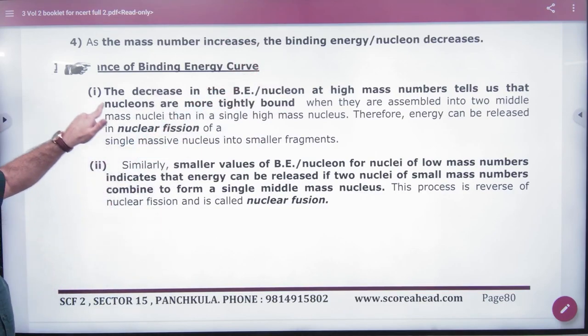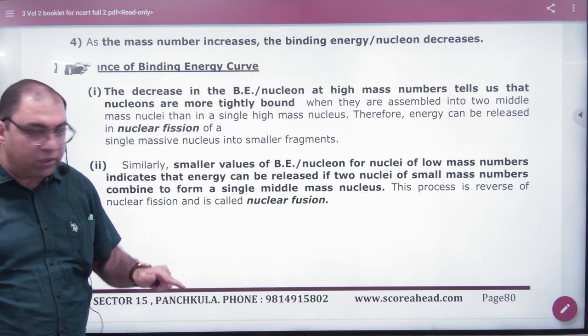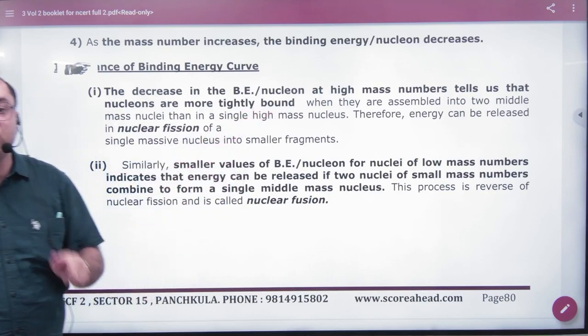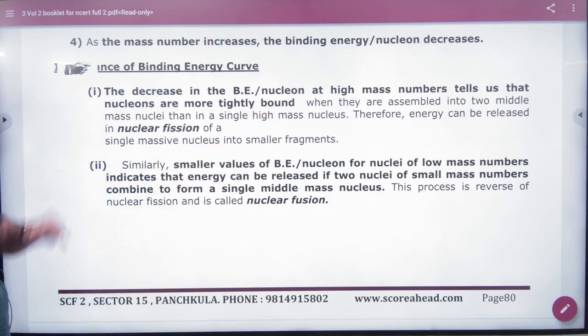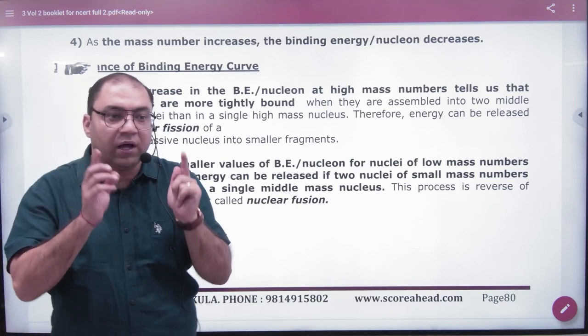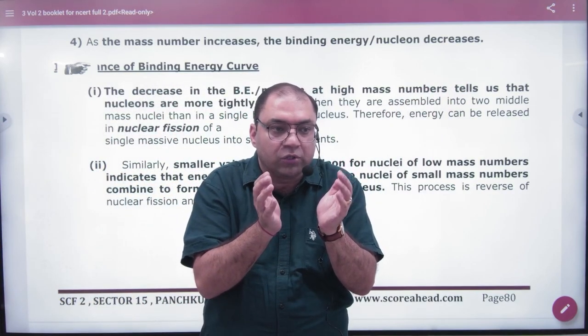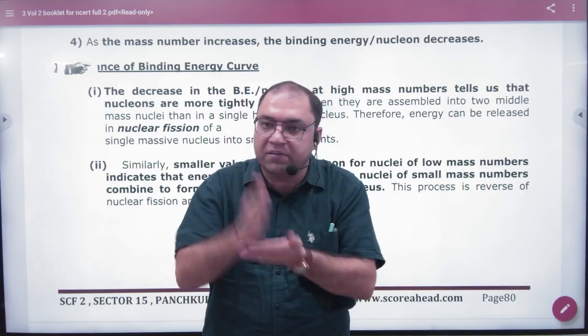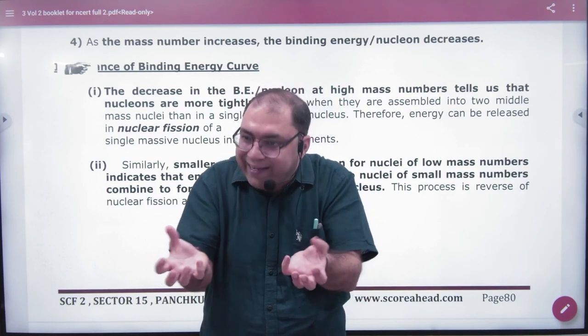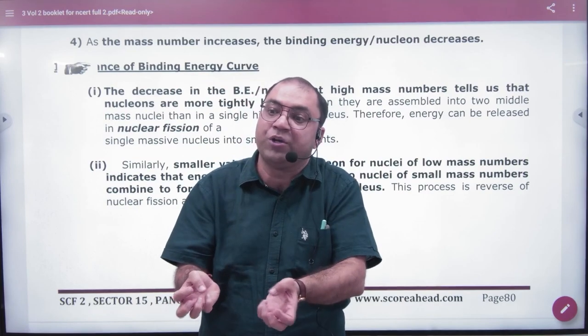We tell this, that nucleons are more tightly bound when they are assembled into two middle mass nuclei. If you have a heavy nucleus, uranium, then it will be loosely bound. If you have two middle mass nuclei, then the nucleons are tightly bound. Then the binding energy per nucleon will increase.